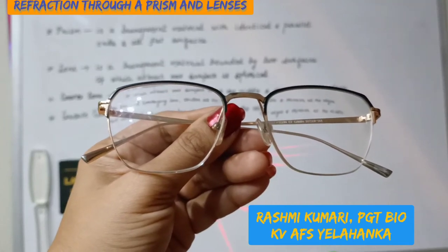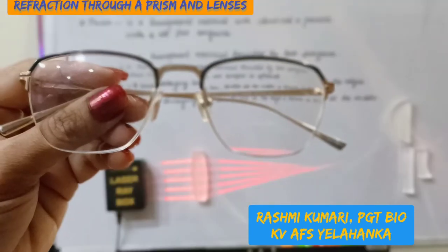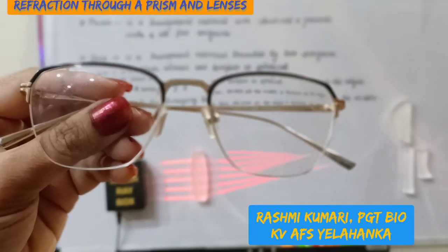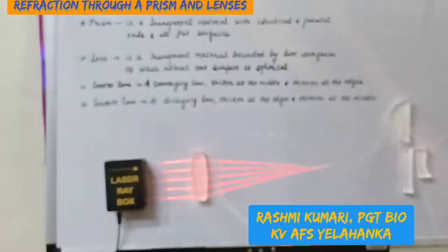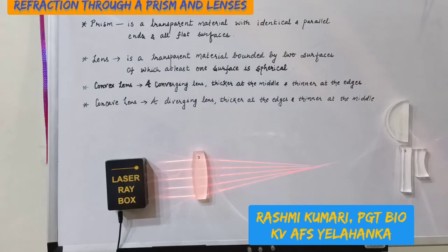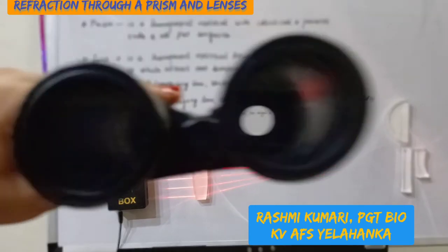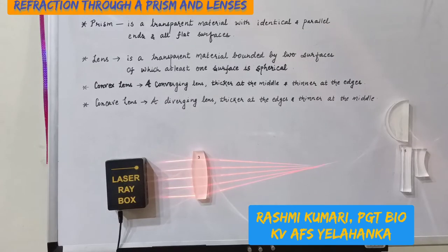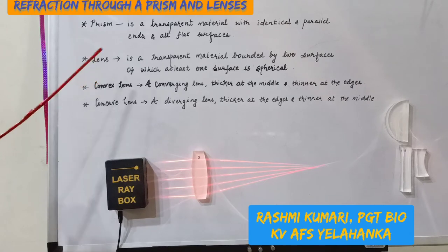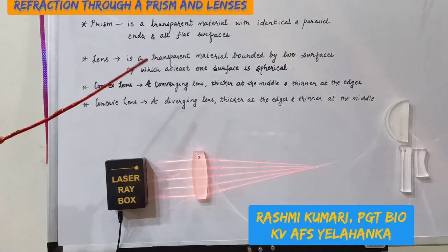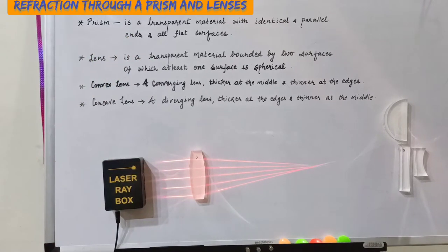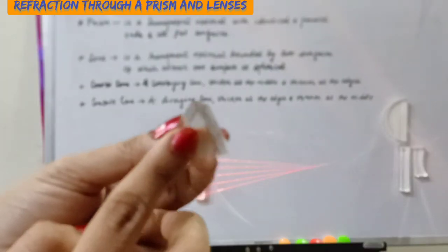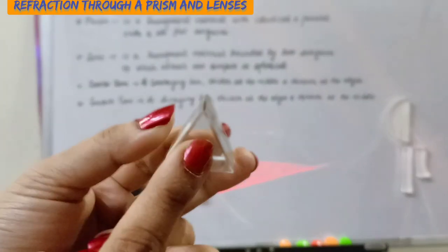You must have observed transparent materials being used in spectacles, telescopes, or camera lenses. In this class we will identify prisms and lenses and will also observe refraction through them. A prism is a transparent material with identical and parallel ends.